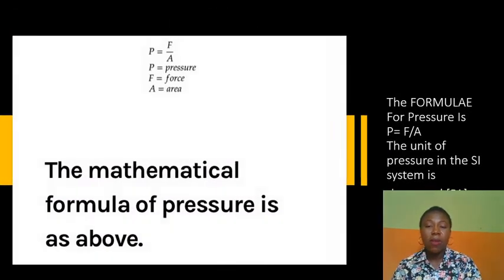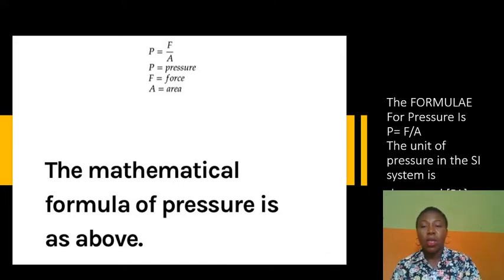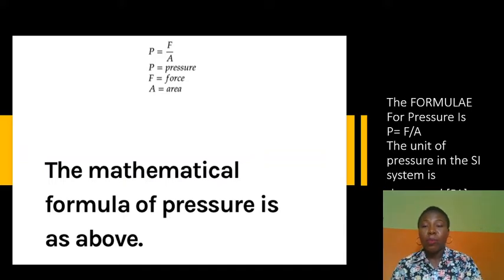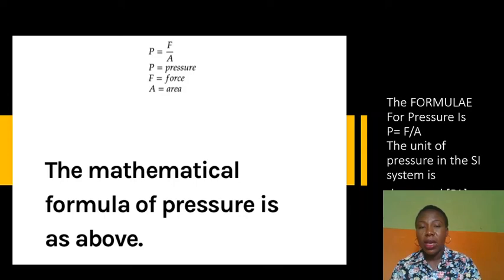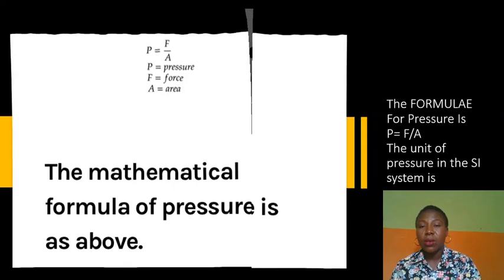The mathematical formula for pressure is: P = F/A, where P is pressure, F is force, and A is area. The SI unit for pressure is the Pascal, abbreviated as Pa.